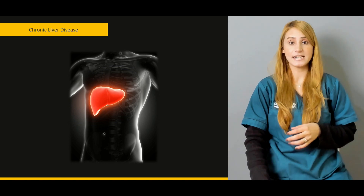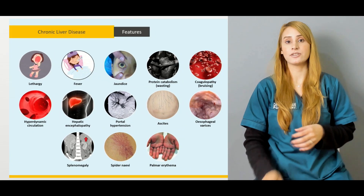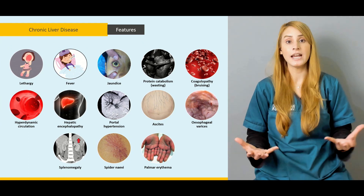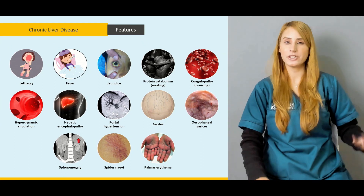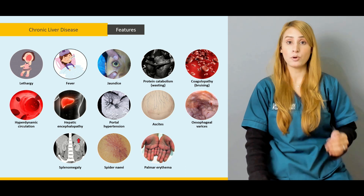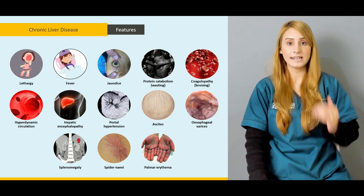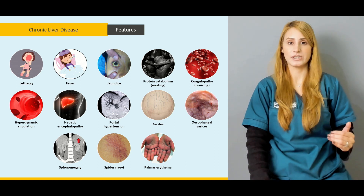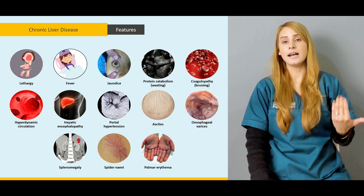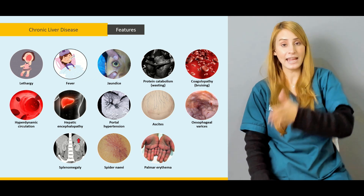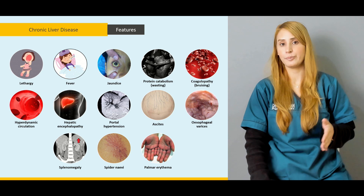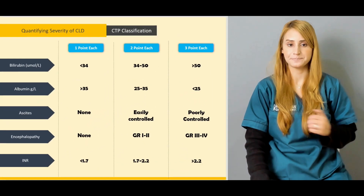Then we'll be talking in detail about the chronic liver disease and how the patient is going to present. We'll be talking about the important salient features of the chronic liver disease, and we'll be talking about the clinical features in case of the advanced disease like the hepatic encephalopathy and the variceal bleed.